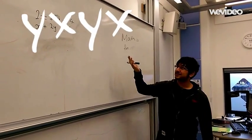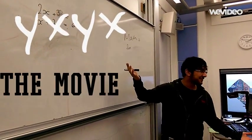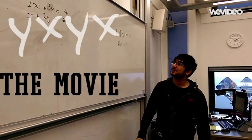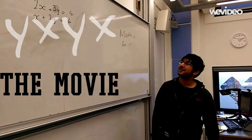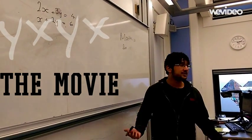Question — it is a very simple question. It is 2x plus 3y, 4x plus 2y equals 6.